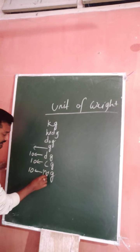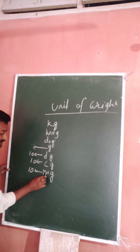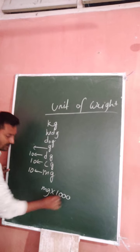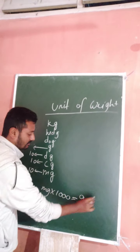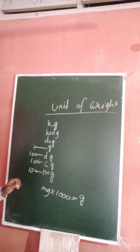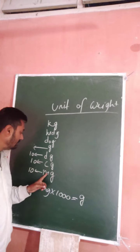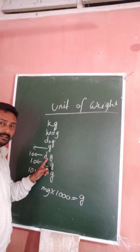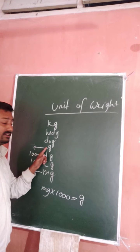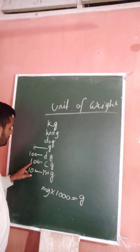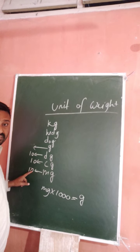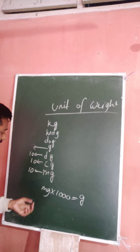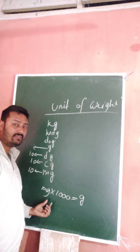So milligram multiplied by 1000 will give you gram, because 10 milligram equals 1 centigram, 10 centigram equals 1 desigram, and 10 desigram equals 1 gram. You have to multiply 10 three times: 10 × 10 = 100, and 100 × 10 = 1000. That is why milligram multiplied by 1000 gives you gram.